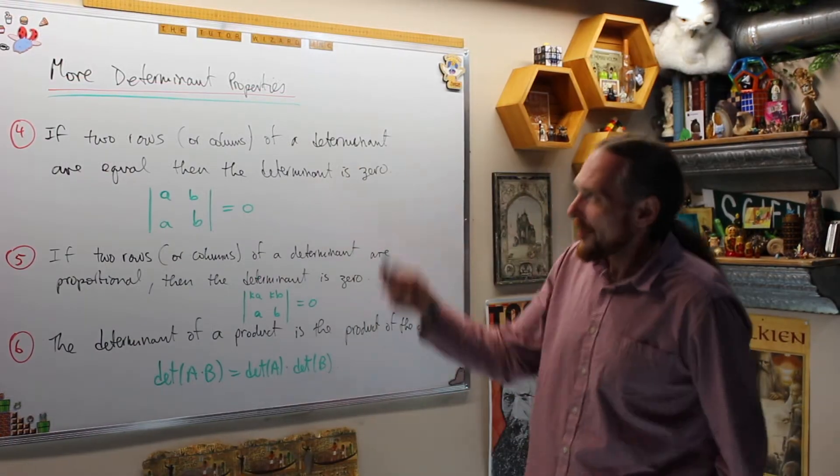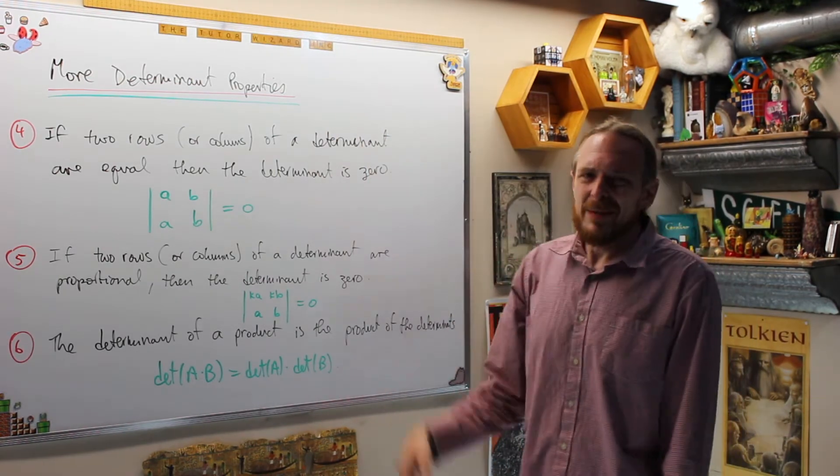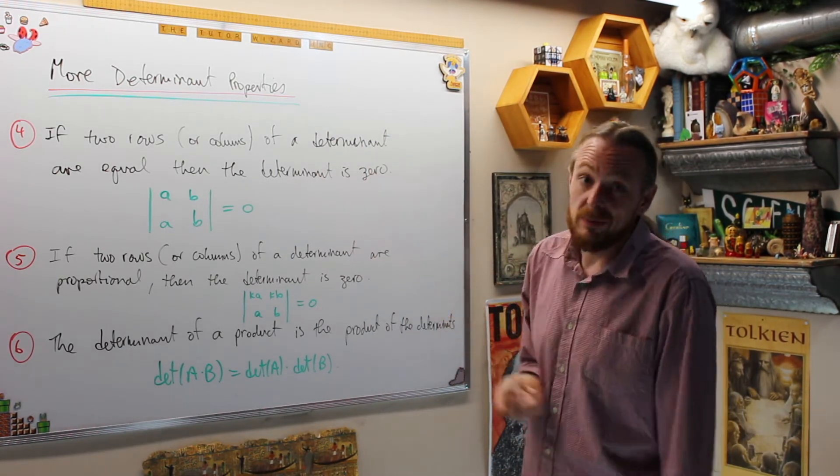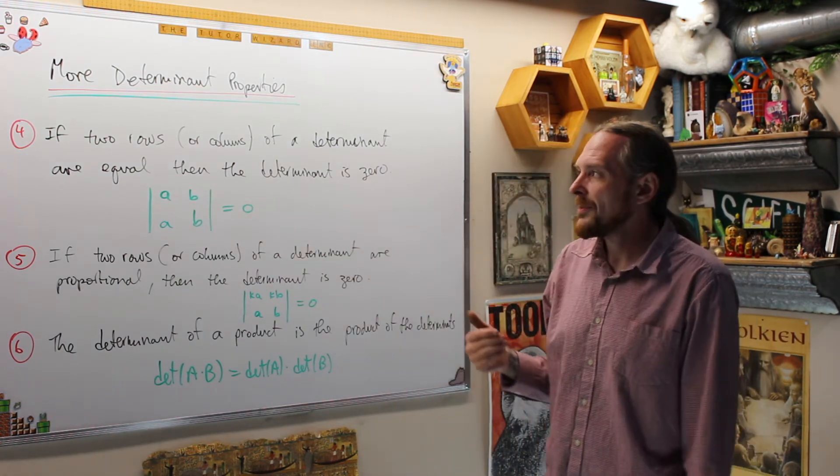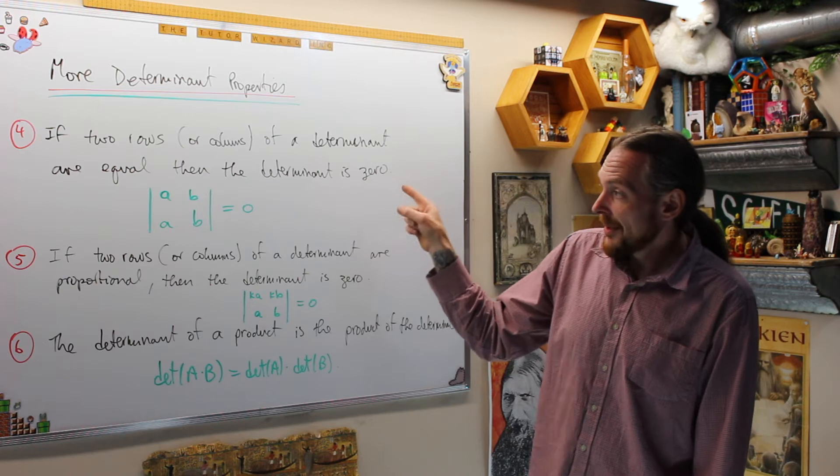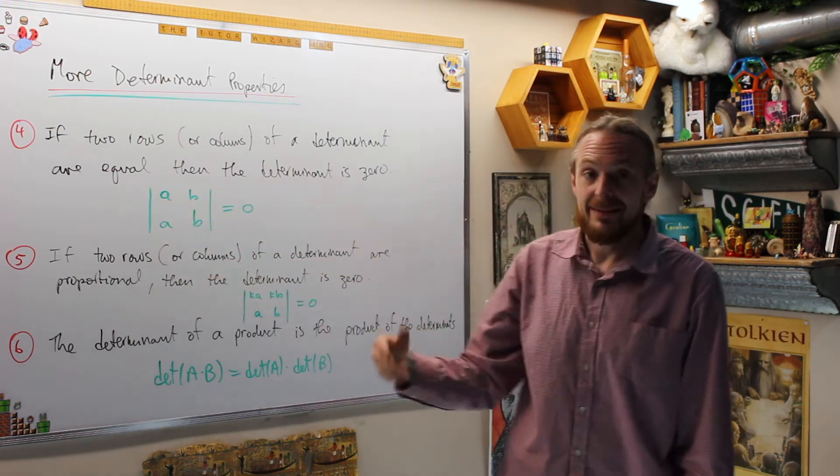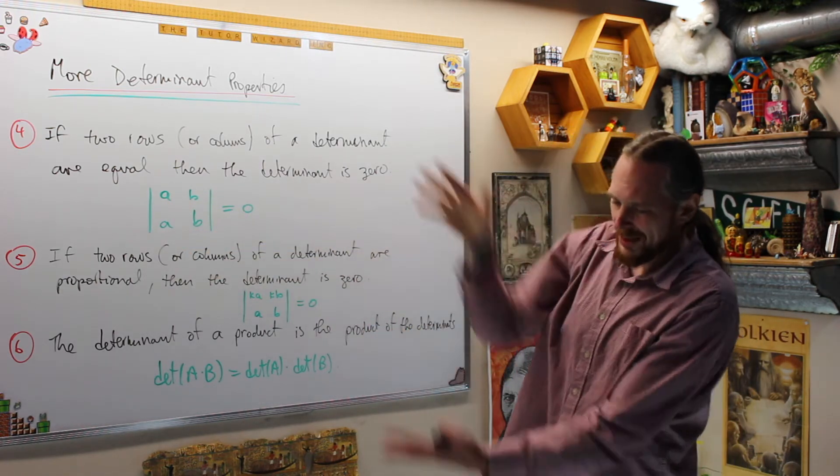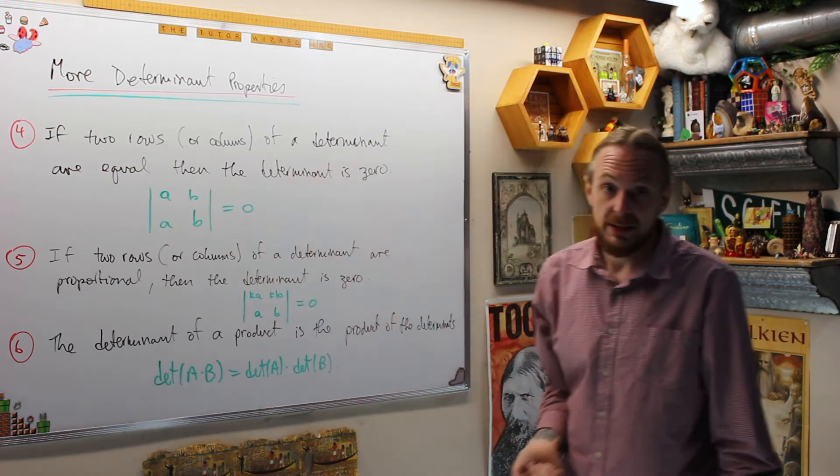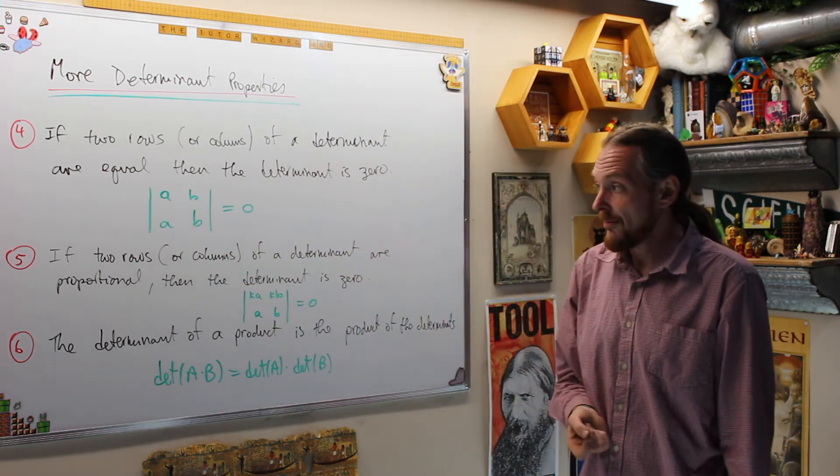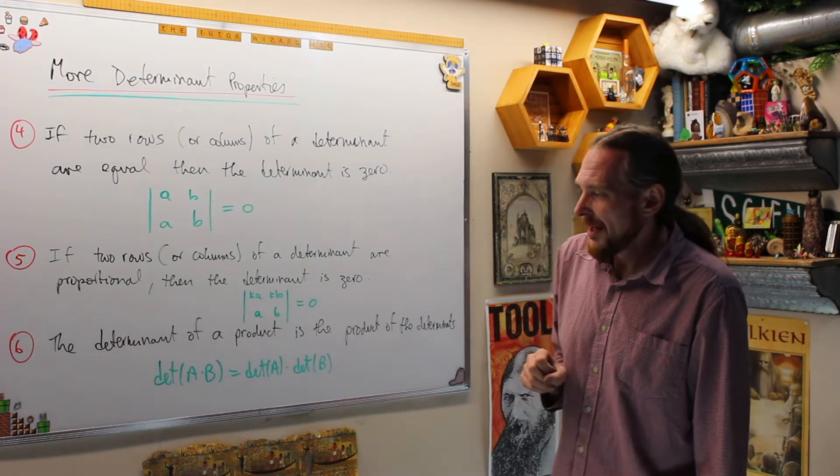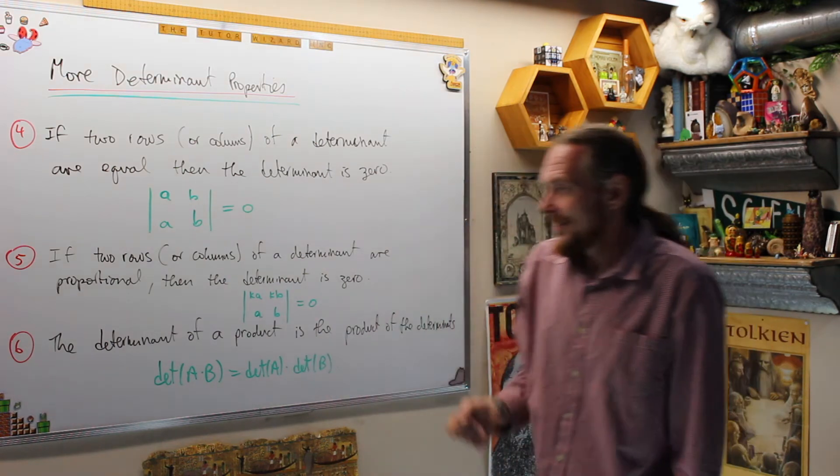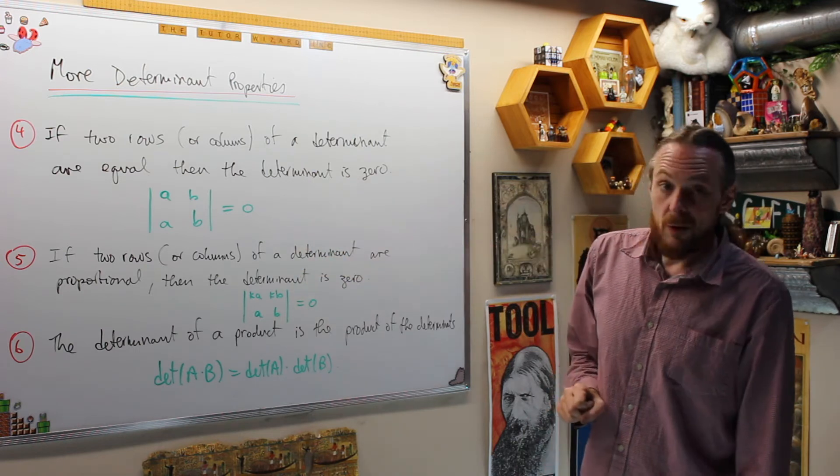Now we're going to do a few more determinant properties. Four, five, six are going to be used less often, but if you can see it, they are also useful when computing determinants. The first one says if any two rows or columns are equal, then the determinant is zero. So if I have A, B, A, B, anytime that happens in any row, it's always zero. Five is an extension of four. It says if they're proportional, so multiples of each other, then the determinant is also zero.